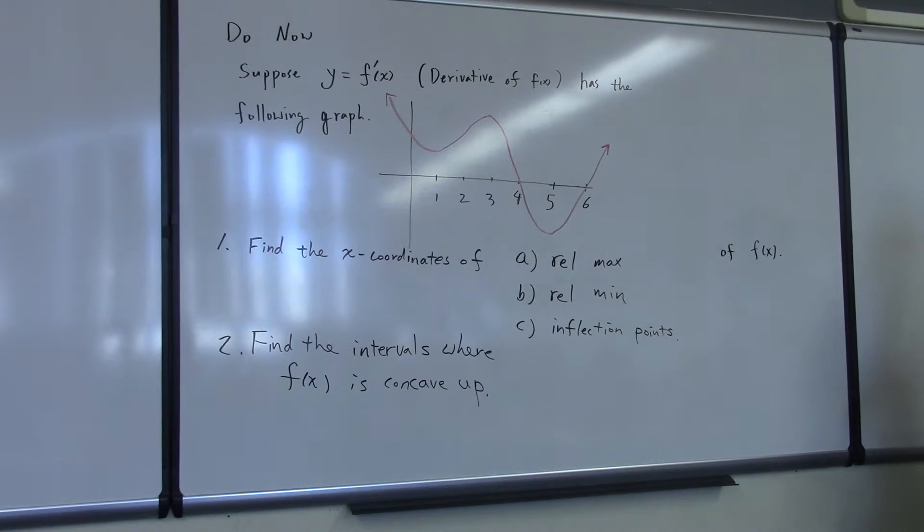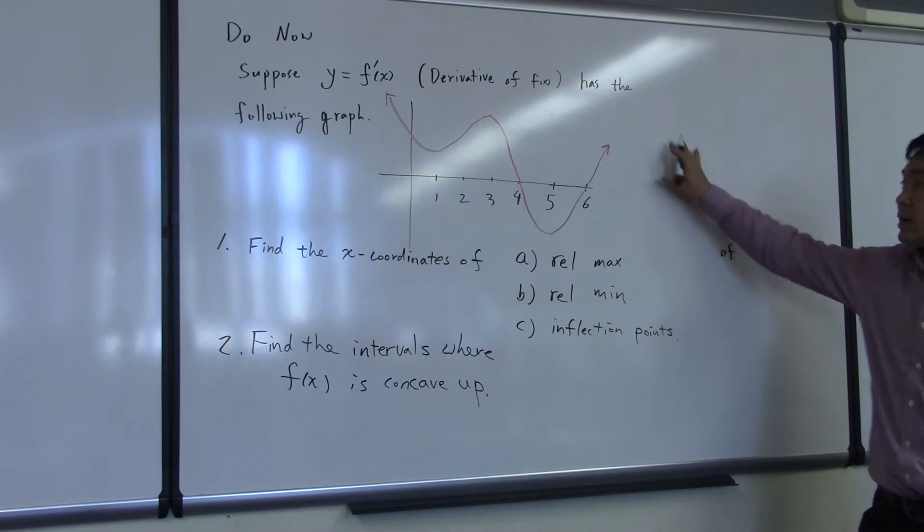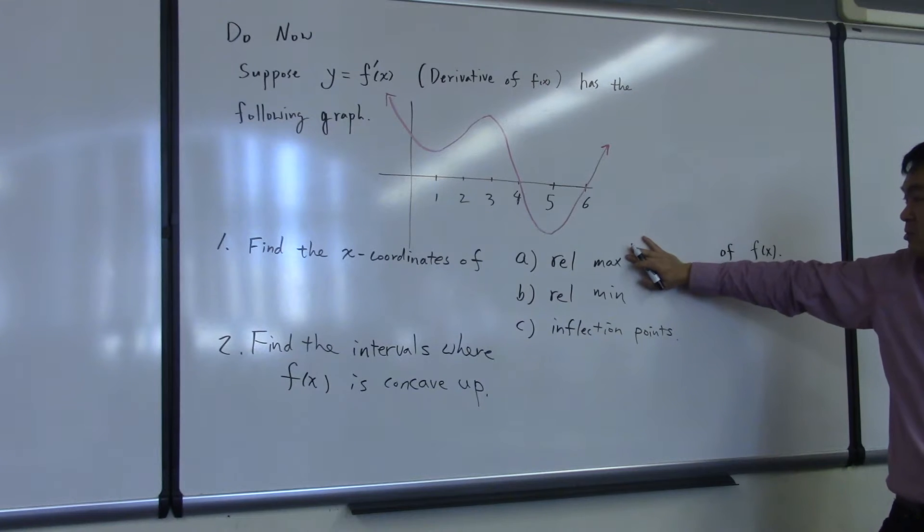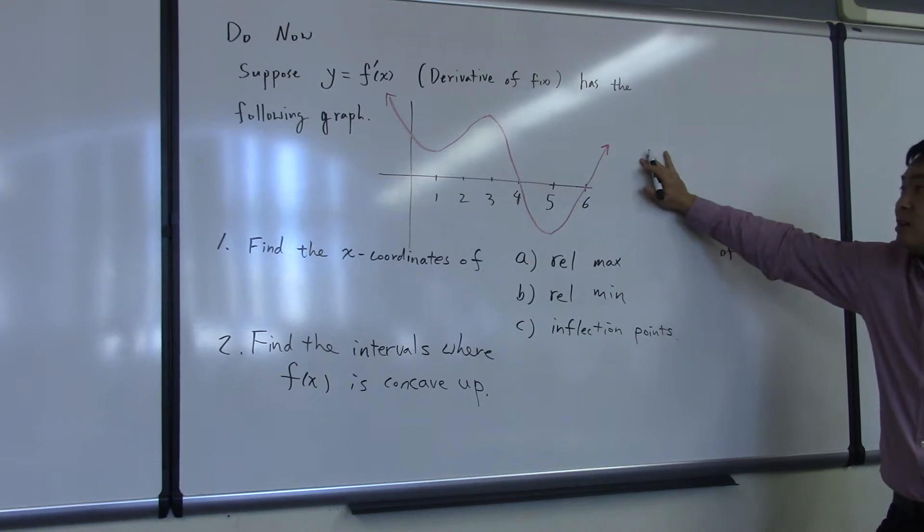What we have here is the graph of f prime, not the graph of f of x. If you're given the graph of f of x, trying to answer questions like where's the relative max or relative min, those will be easy questions. What makes this question challenging is that the graph you have is not the graph of the original function f of x, it's the graph of the derivative of f of x.